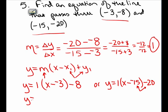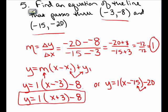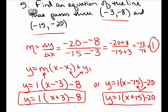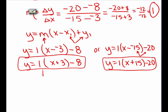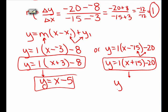Both should be simplified. The first becomes y = 1(x + 3) - 8, and the second becomes y = 1(x + 15) - 20. Keep in mind you can rewrite point-slope form in slope-intercept form. Distributing the 1 and simplifying both equations, you find that each gives y = x - 5. Both point-slope forms simplify to the same slope-intercept equation.